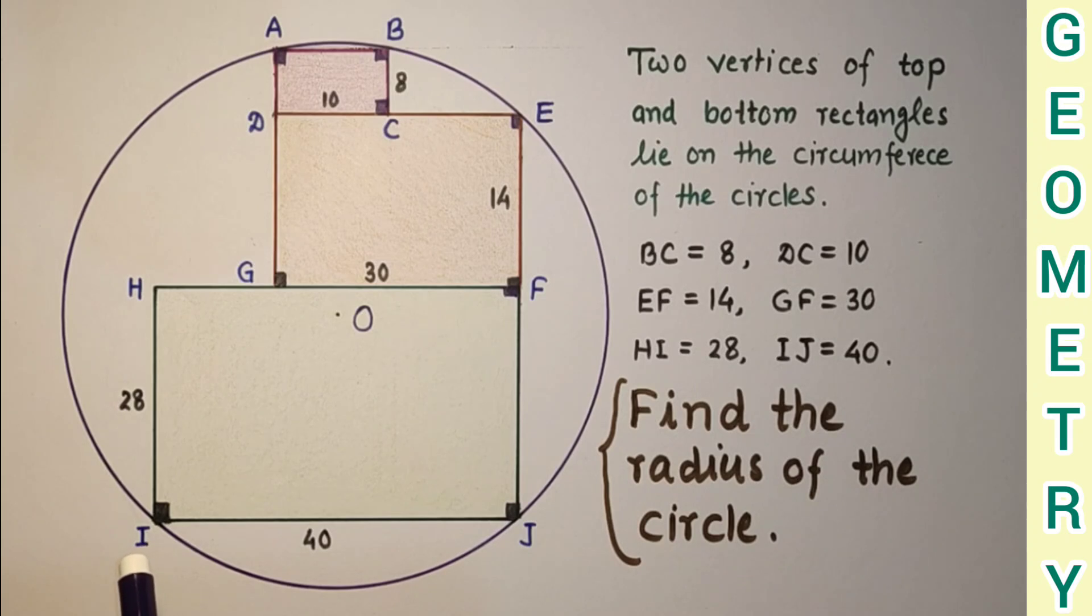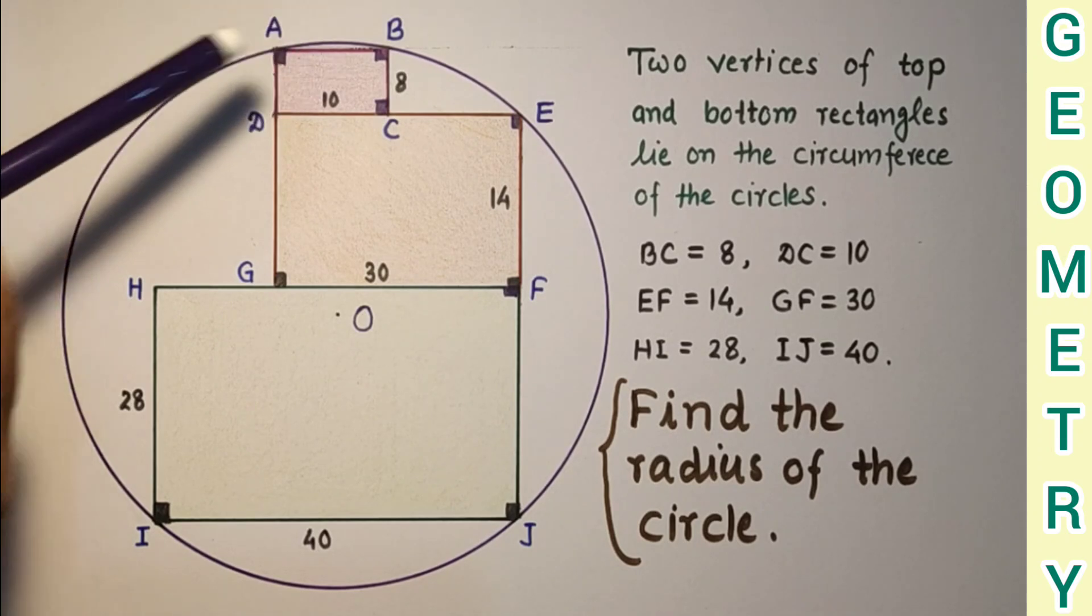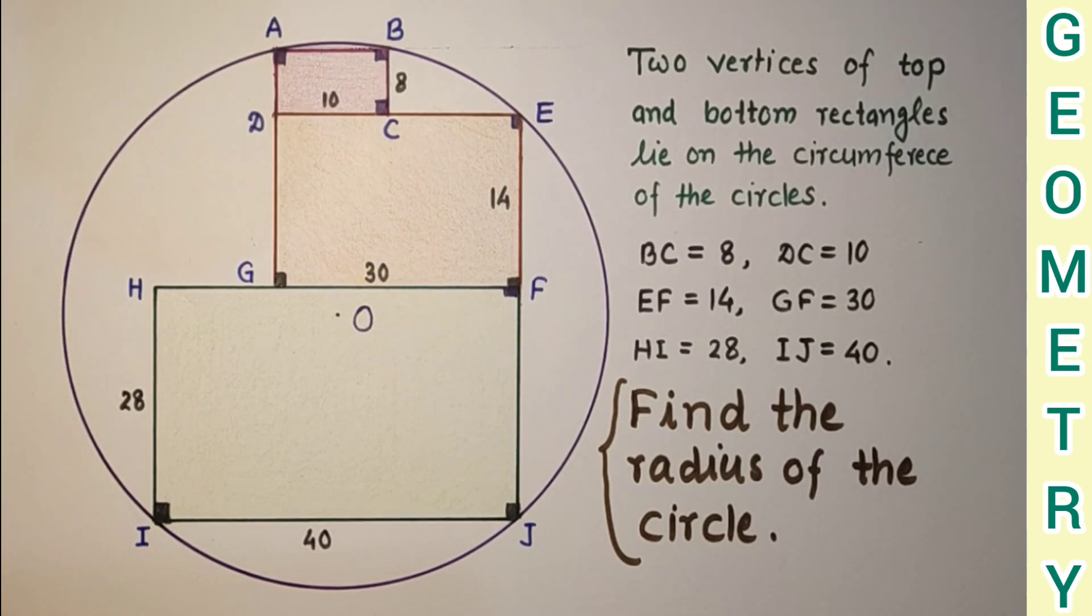The bottom rectangle's two vertices are on the circumference of the circle, and this rectangle's two vertices A and B are on the circumference of the circle.